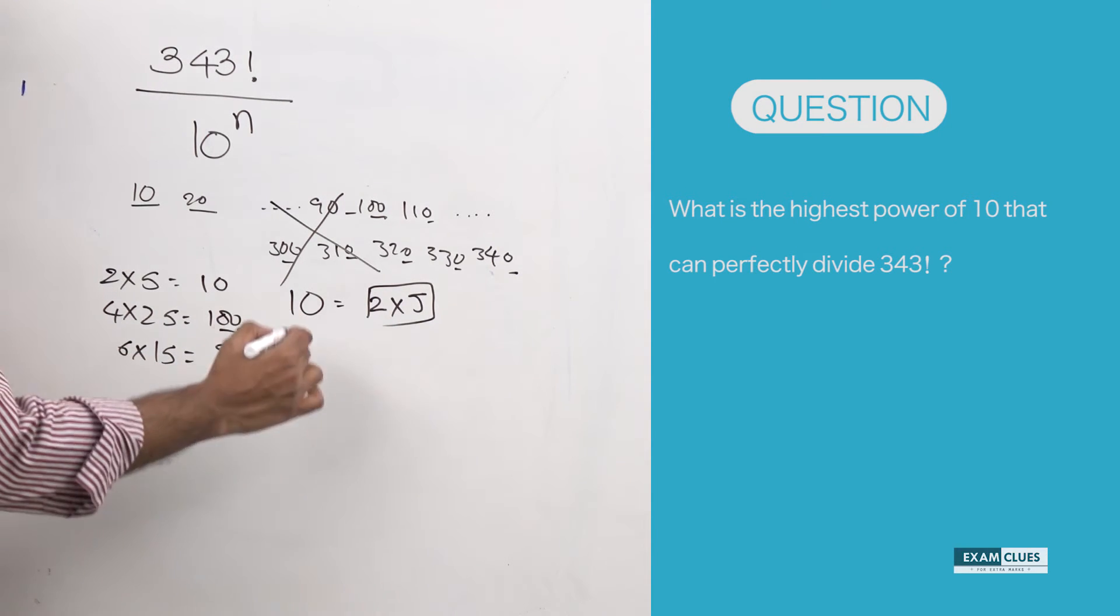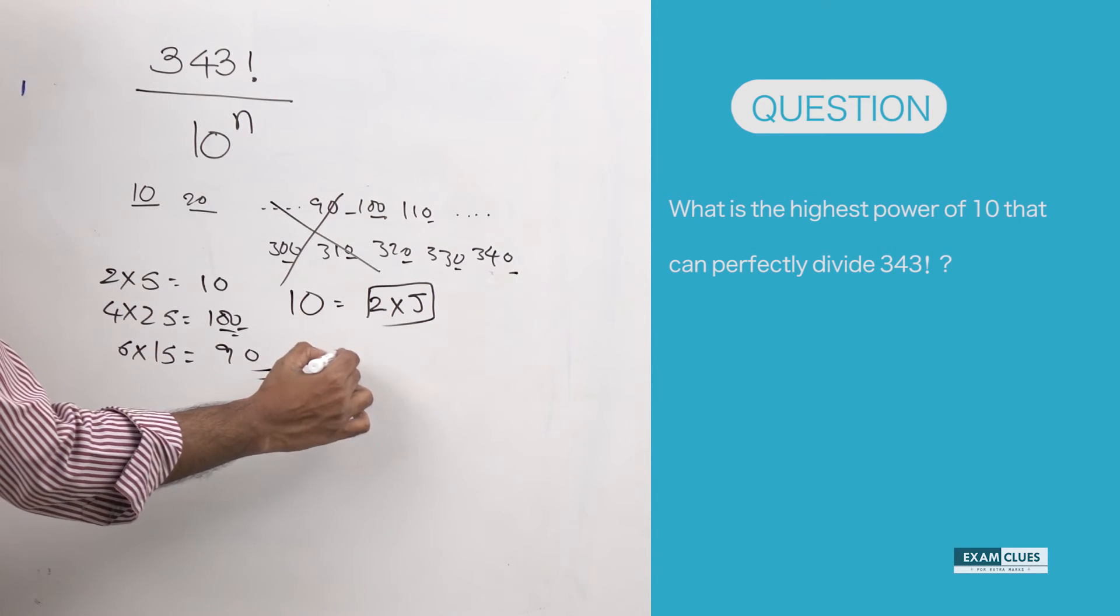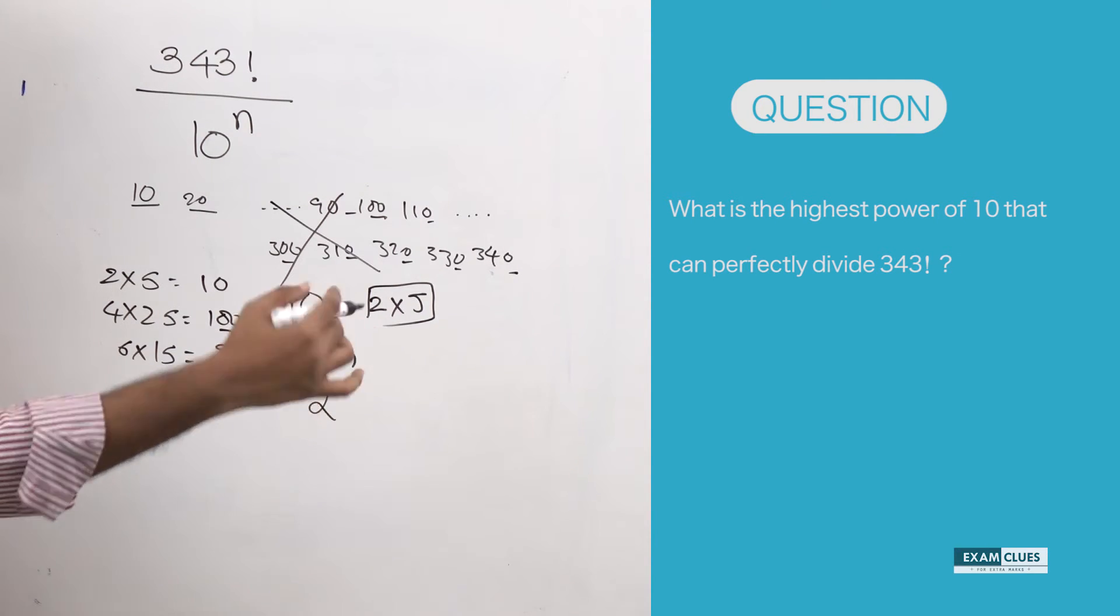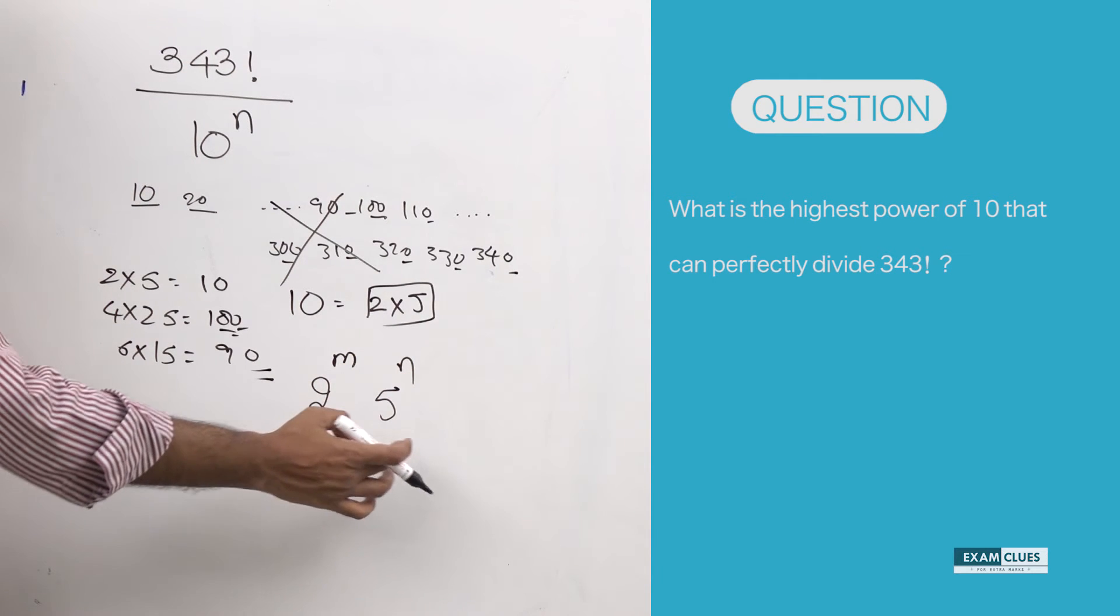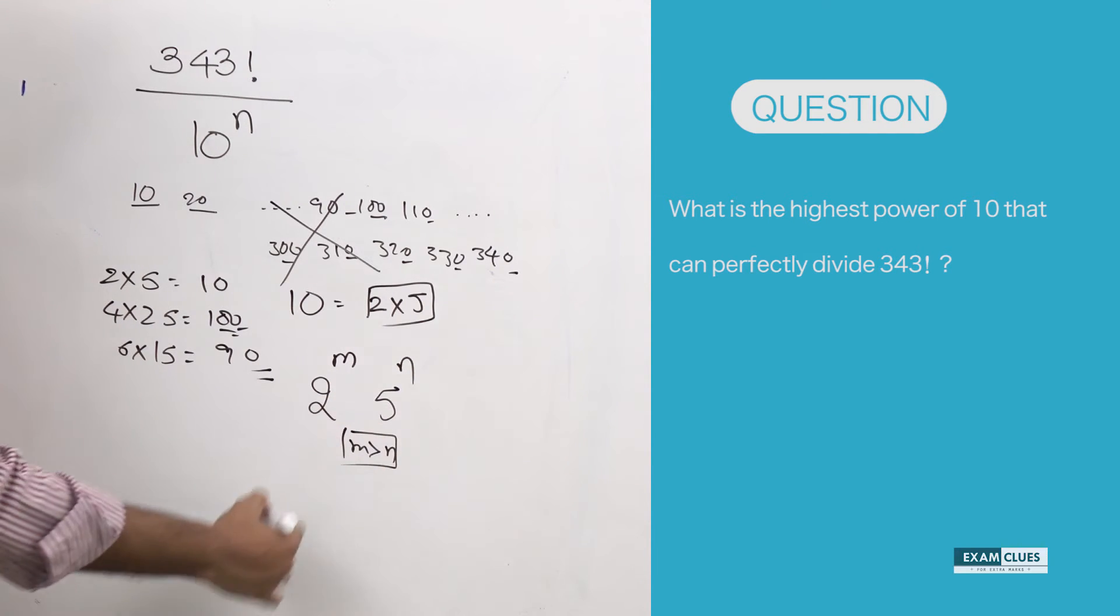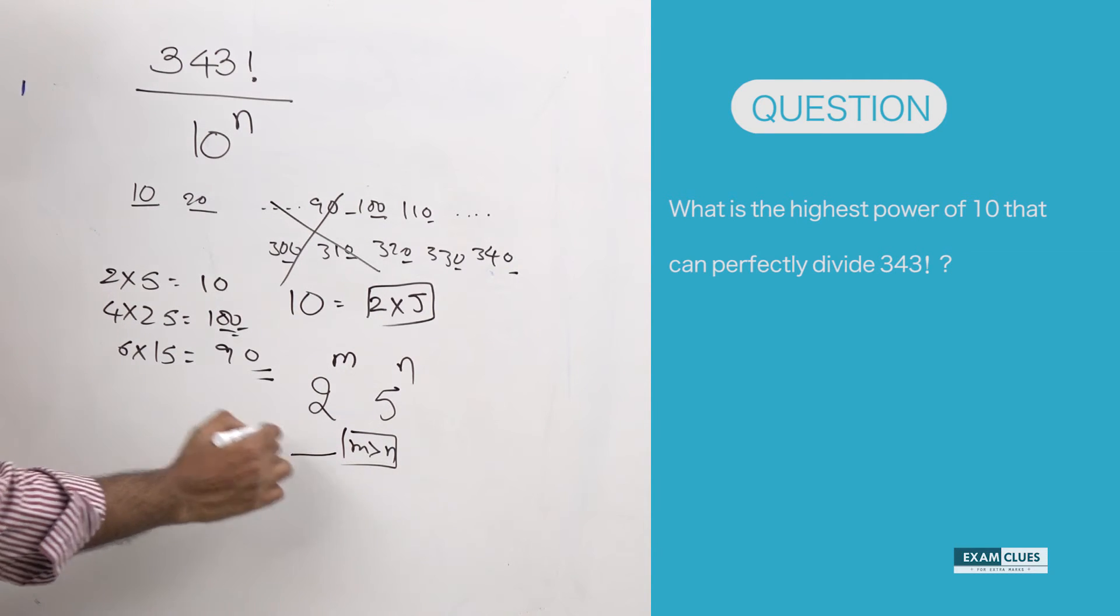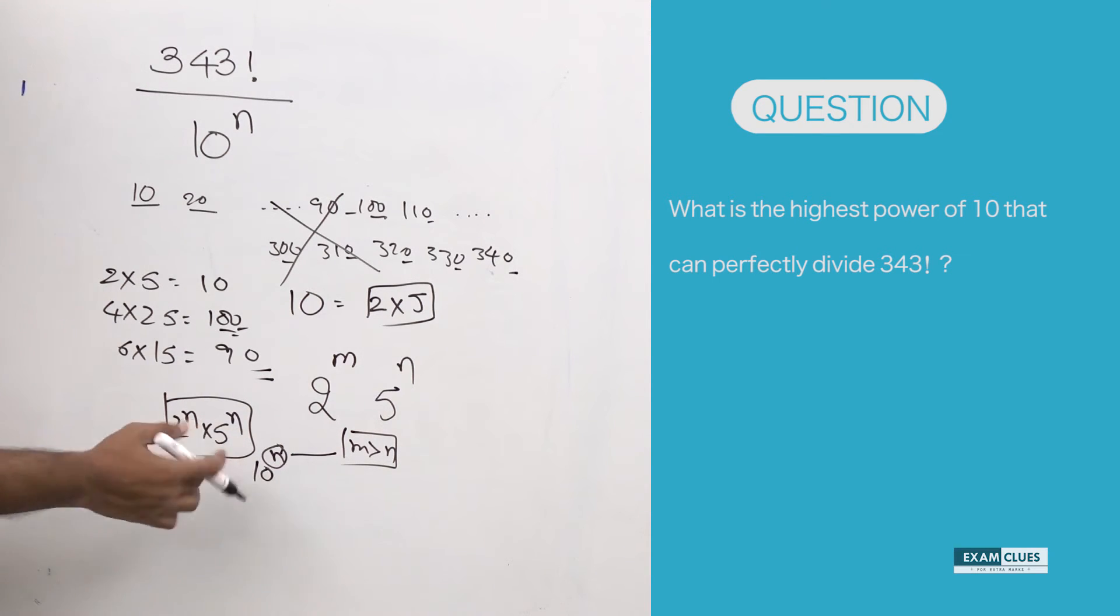All we need to find is how many tens can be formed in this way. Let's say there are total m twos—that is 2 to the power m—and there are total n fives in 343 factorial—5 to the power n. Obviously m would be greater than n, but the number of tens that can be formed would be only 2 to the power n times 5 to the power n.